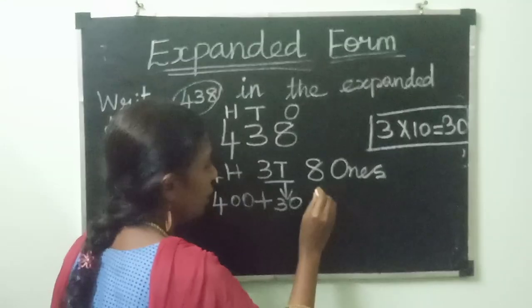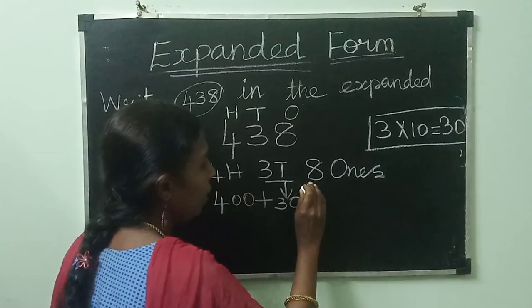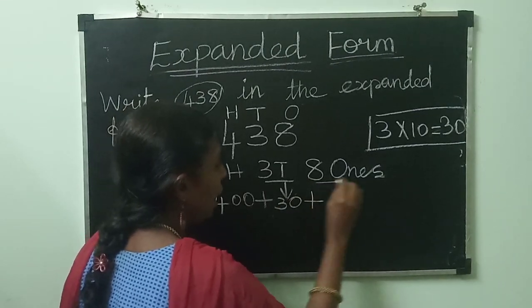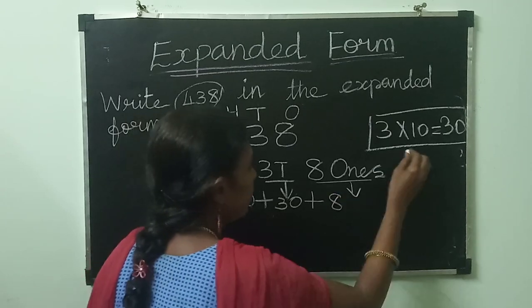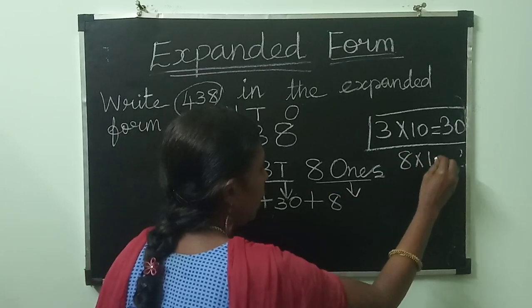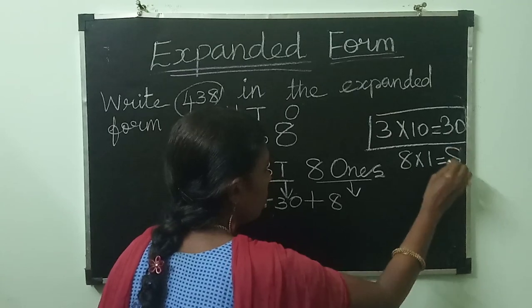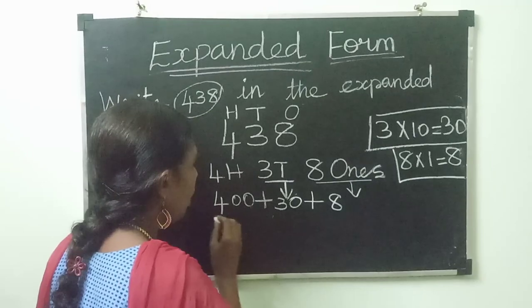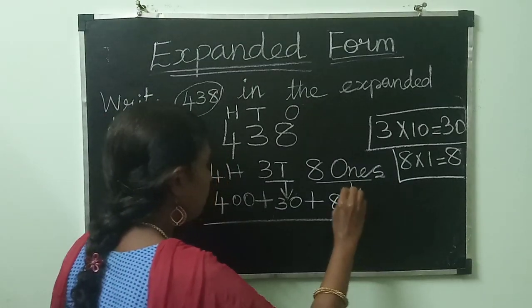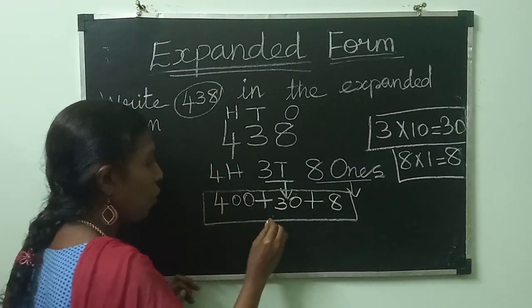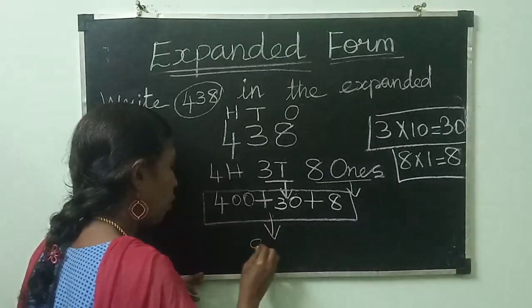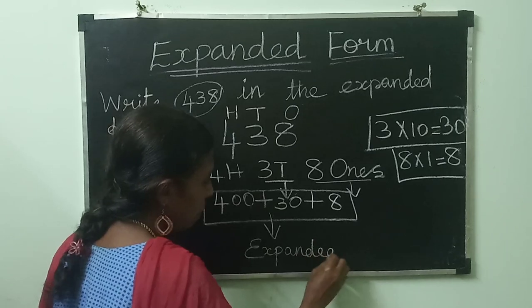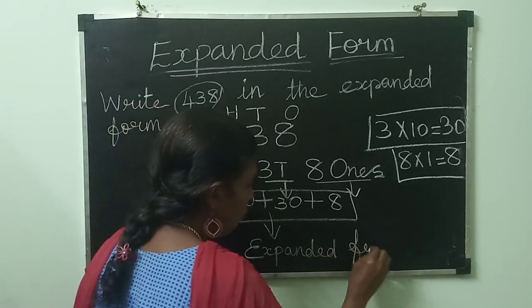We have 8 ones also. 8 ones are 8 — you know very well the ones table. Now see this answer. The answer is in expanded form: 400 plus 30 plus 8.